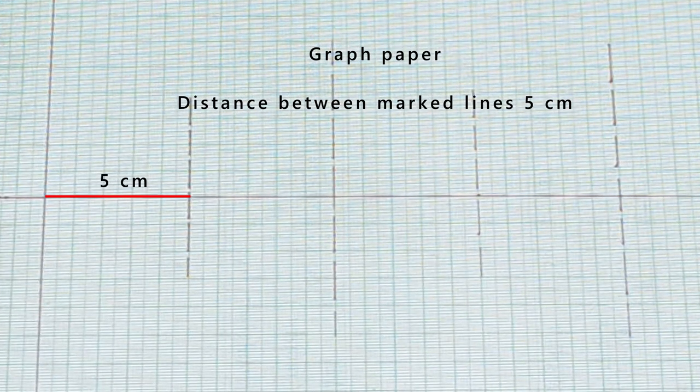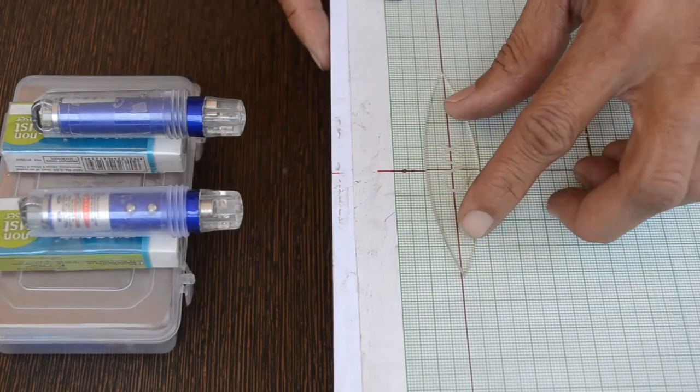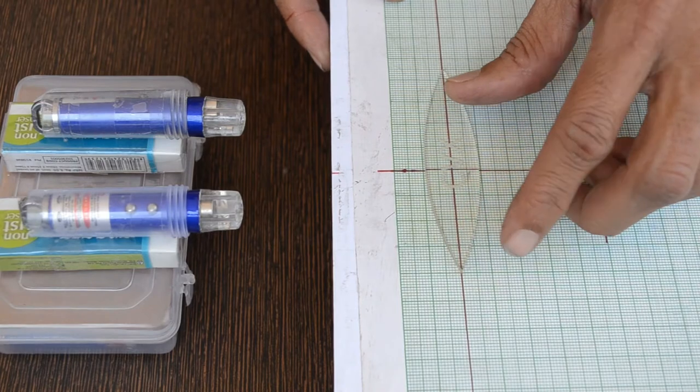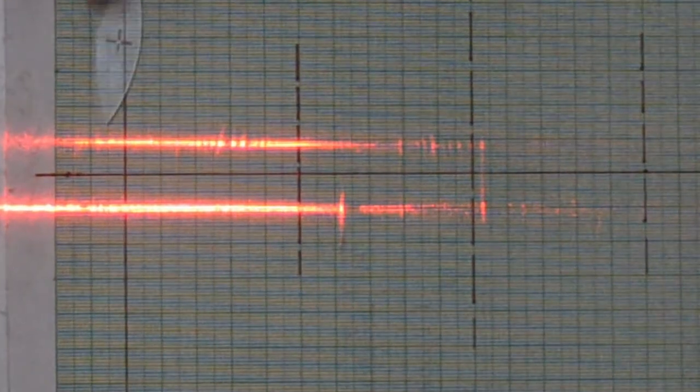To make calculations easier, dashed lines are marked at a distance of 5 cm. Lasers placed on the left side act as a light source. Lenses are placed here so that we can calculate distances very easily.